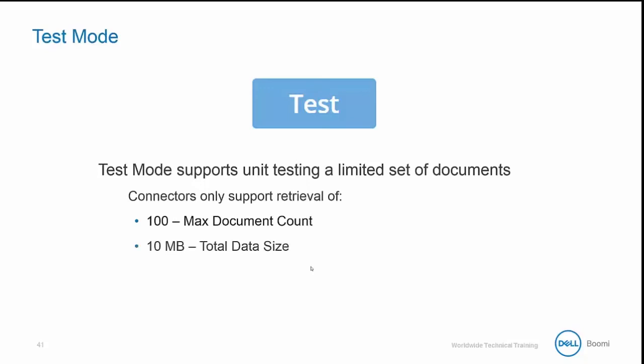If your data size exceeds the max document count, it will only pull in the first 100 documents. However, if you exceed the 10 megabyte total data size limit, you will receive an error and your process will not execute properly. The best way to use test mode is to take a small data sample representative of your larger data set. This will ensure your process does not run into errors from exceeding these limits. Test mode is designed to verify that your process is functioning correctly, but is not intended to be used as a production environment.